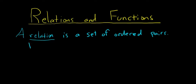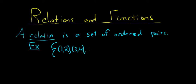Let's look at some examples of relations, so you see how simple it really is. We have a set — we do have to use set notation — and let's say we have the ordered pairs (1,2), (3,4), and (5,6). I just made these numbers up, and this is a relation. That's all it is: it's a set of ordered pairs.